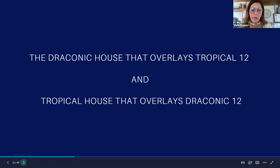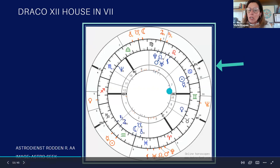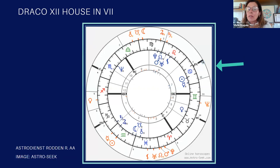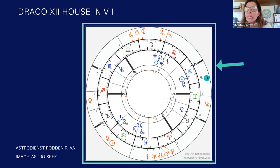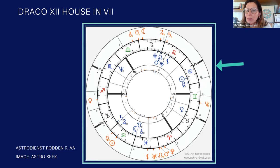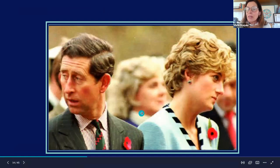Let's have a look at an example of this. In this chart, the draconic ascendant is on the seventh, which makes us think that for this person relationships are going to be very important. But if we look at the draconic 12th, it is exactly conjunct Mercury, and Mercury rules the seventh. So for this person, relationships are very important, but sorrow is to be expected through those relationships — and of course, we're talking about Princess Diana.